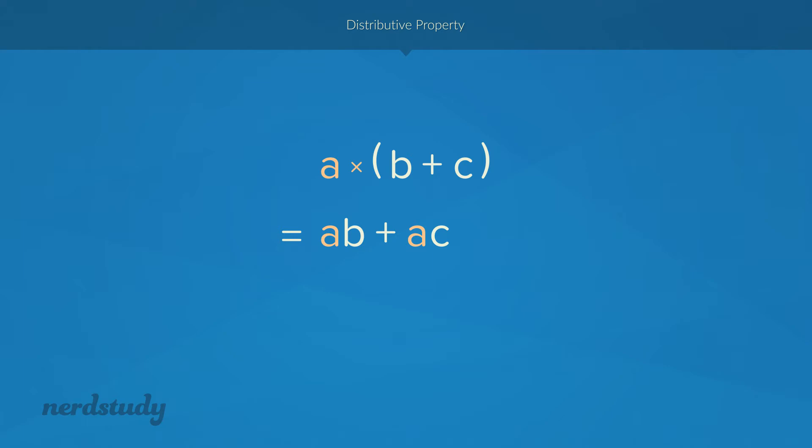What the distributive property guarantees us is that so long as we distribute that multiplication that we're supposed to do to each term, then we're going to end up with the exact same answer, the exact same final value as we would have if we did simplify the brackets first.